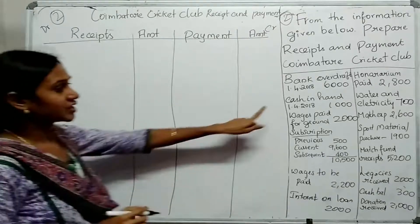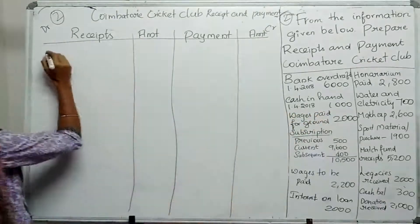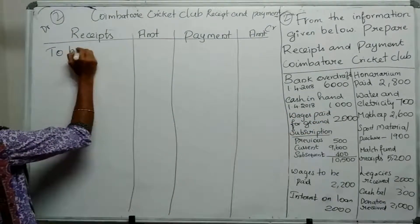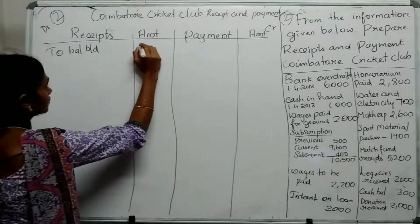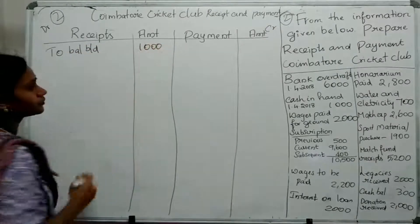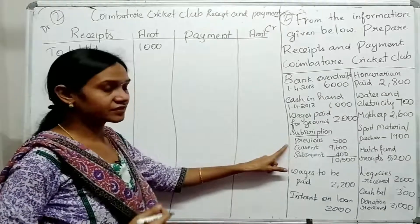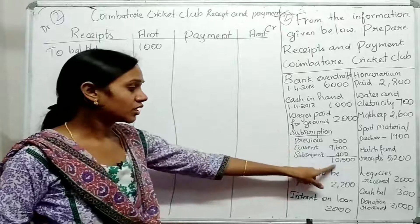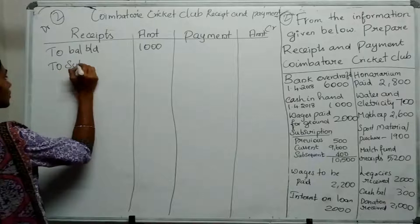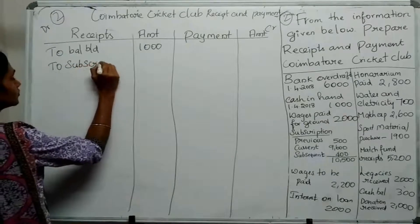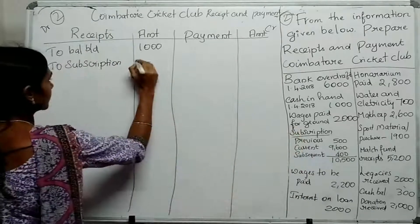Receipt items: First, Cash in Hand as on 1-4-2018 is $1,000. Balance brought down is $1,000. Next, Subscription received: $10,500.